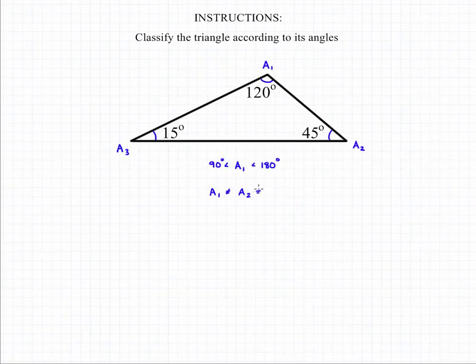Additionally, angle one isn't equal to angle two, and neither of them are equal to angle three. This tells us that none of the sides can be equal because they're not opposite equal angles. So side one can't equal side two, which can't equal side three.